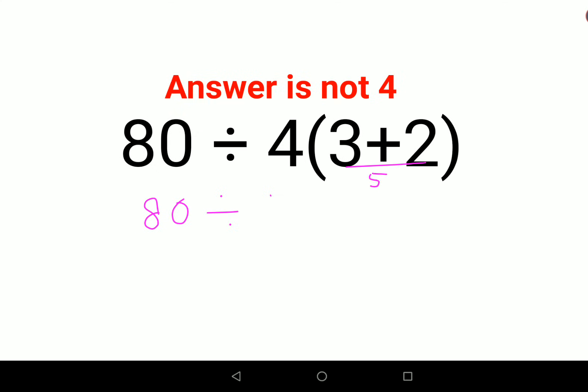They take it as 5 and they think that this everything is in the bracket. So they do 4 into 5 which is 20, and then they think the answer is coming out to be 4, which is absolutely wrong.